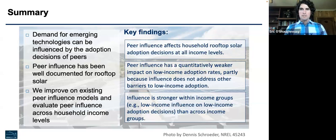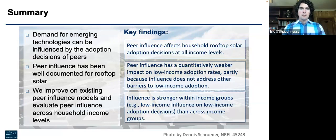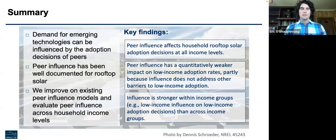We make some improvements on existing peer influence models, and our key contribution is evaluating influence across household income levels, which we're able to do because of the data Galen mentioned. Three key findings: first, peer influence affects household adoption decisions at all income levels. Second, influence has a quantitatively weaker impact on adoption rates among low-income households. Third — probably the key finding — influence is stronger within income groups than across income groups. For instance, a low-income household is more strongly influenced by seeing solar on another low-income household than on a high-income household.